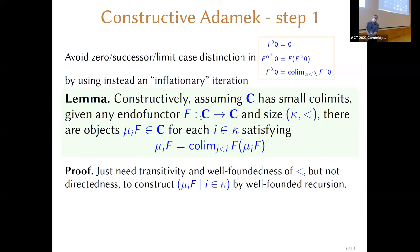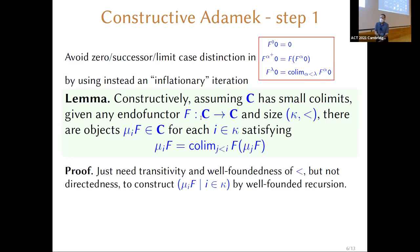Given a category with all small co-limits and an endo-functor on that category, and given a size in the previous sense, you can construct the inflationary iteration by well-founded recursion. There is a sequence of objects indexed by sizes — μ_i F as i ranges over the sizes — satisfying that recursion equation. It satisfies not just the equation at the level of objects but also at the level of morphisms, with the transfer from μ_i to μ_j induced by the co-limit structure correctly.